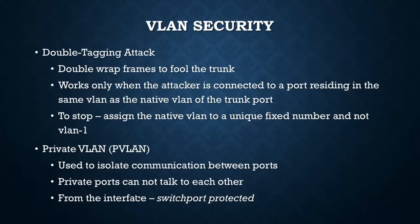Some VLAN security issues: there's a double tagging attack where they wrap frames to fool the trunk from one VLAN into another. The easiest way to stop it is to make sure your native VLAN is a number other than 1 - by default all VLANs are in VLAN 1, so always change the native VLAN. Another security practice is to create private VLANs - private VLANs isolate communication between ports, and private ports can't talk to one another. Even with a router you can make VLANs talk to each other, but private VLANs don't allow communication from other VLANs.